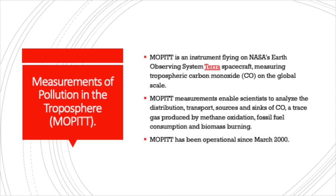MOPITT, the Measurement of Pollution in the Troposphere instrument, is fired on NASA's Earth Observing System Terra spacecraft, measuring tropospheric carbon monoxide on a global scale. MOPITT's measurements enable scientists to analyze the distribution, transport, sources, and sinks of carbon monoxide — a gas produced by methane oxidation, fossil fuel consumption, and biomass burning. MOPITT has been operational since March 2000.